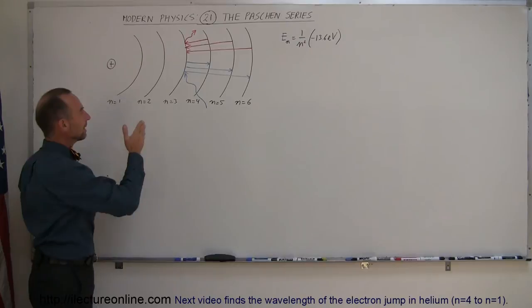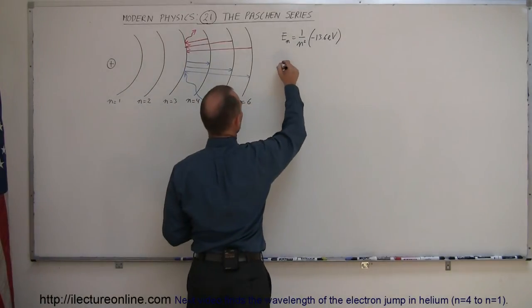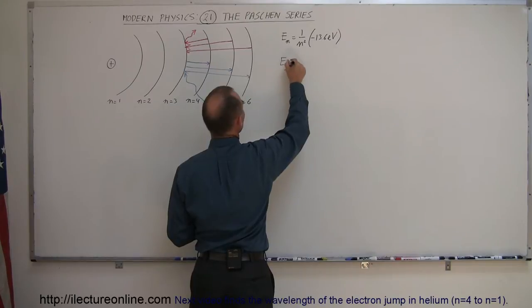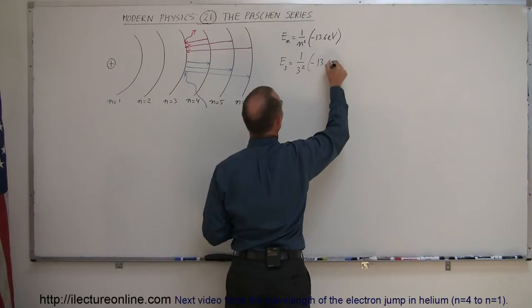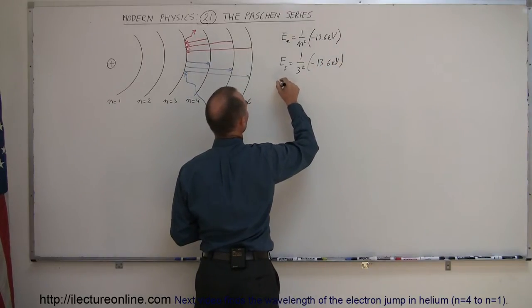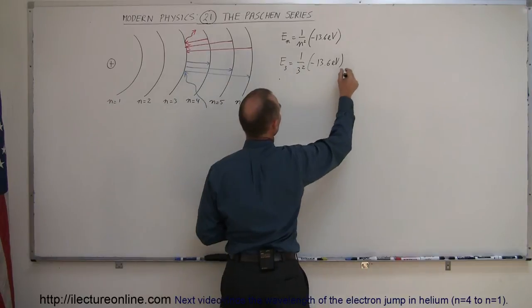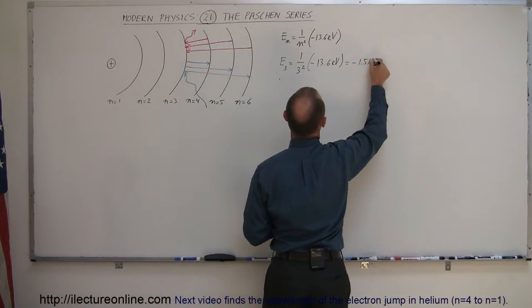Now, finding the energies of those various levels, we again use this equation right here. We can say that E sub 3 is equal to 1 over 3 squared times minus 13.6 electron volts, which means that the third energy level E sub 3 is equal to minus 1.51 electron volts.